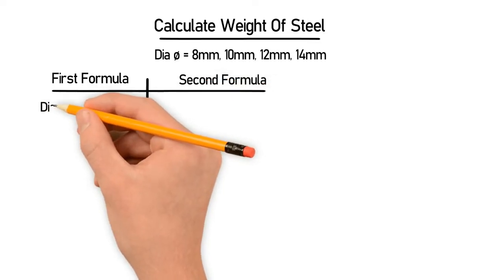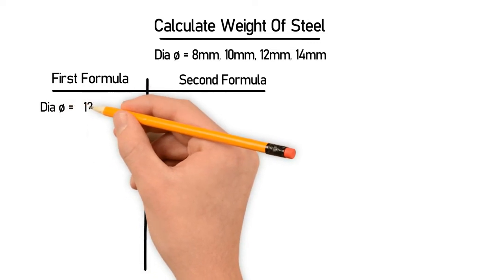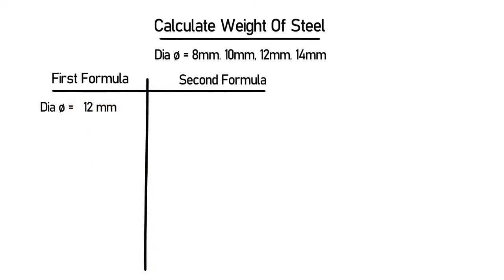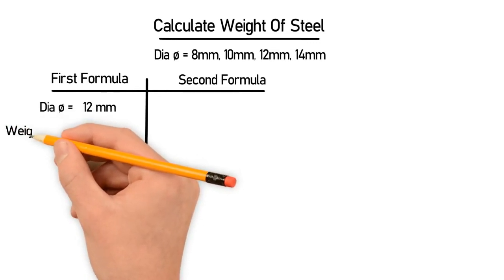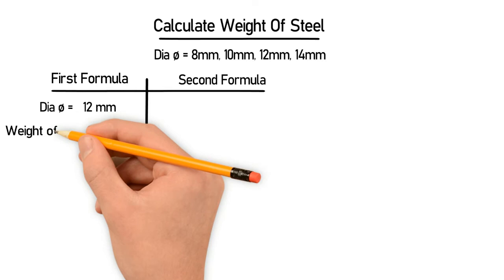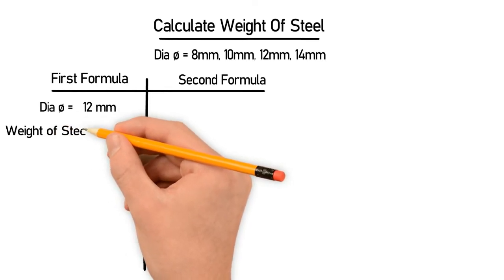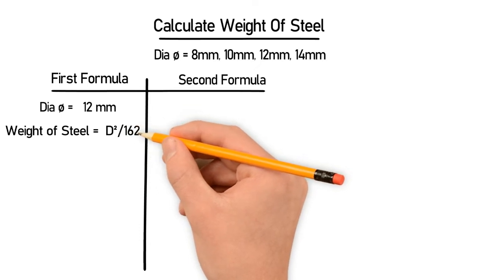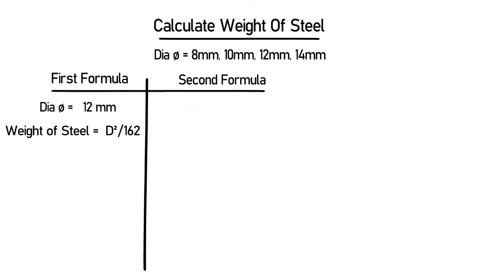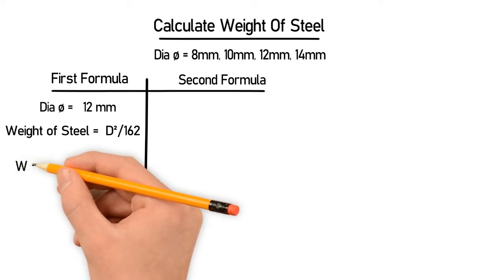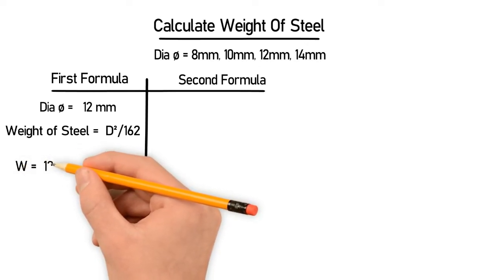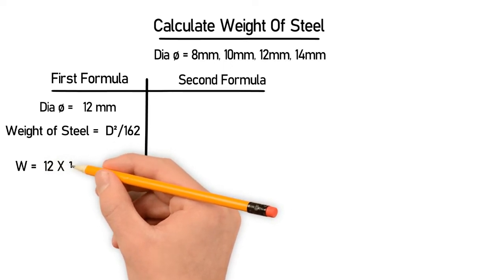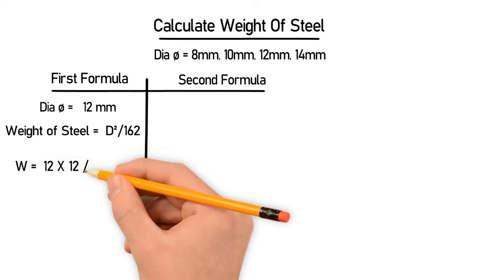Let's take the example of steel with diameter equal to 12mm. The first formula for weight of steel is W = D²/162. So let's put the diameter into the formula: W = 12 × 12 / 162.